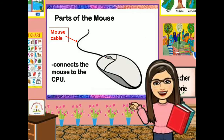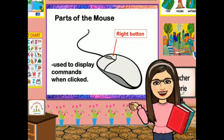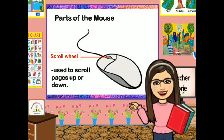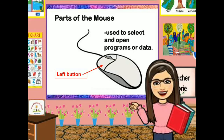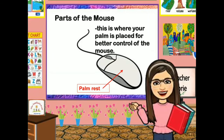The mouse cable connects the mouse to the CPU. The right button is used to display commands when clicked. The scroll wheel is used to scroll pages up or down. The left button is used to select and open programs or data. The palm rest is where your palm is placed for better control of the mouse.